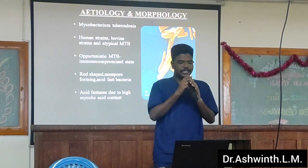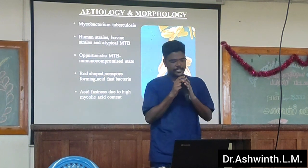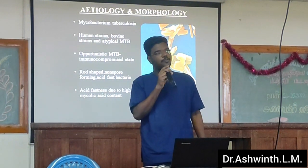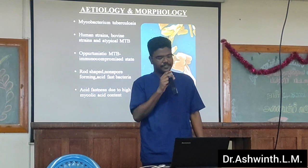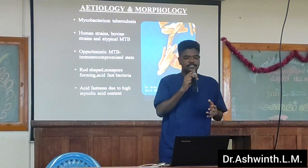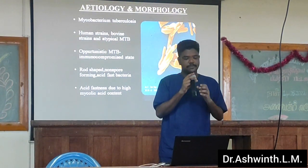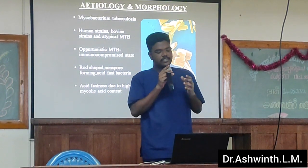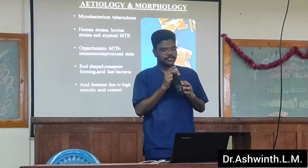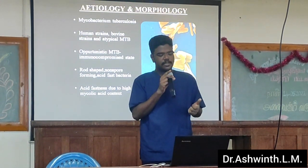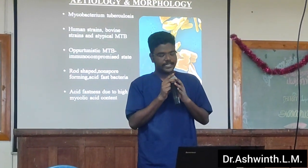The etiology of tuberculosis is Mycobacterium tuberculosis. It is a rod-shaped gram-positive acid-fast bacteria. The acid-fastness is due to the high mycolic acid content. There are three strains: human strain, bovine strain, and an atypical strain.